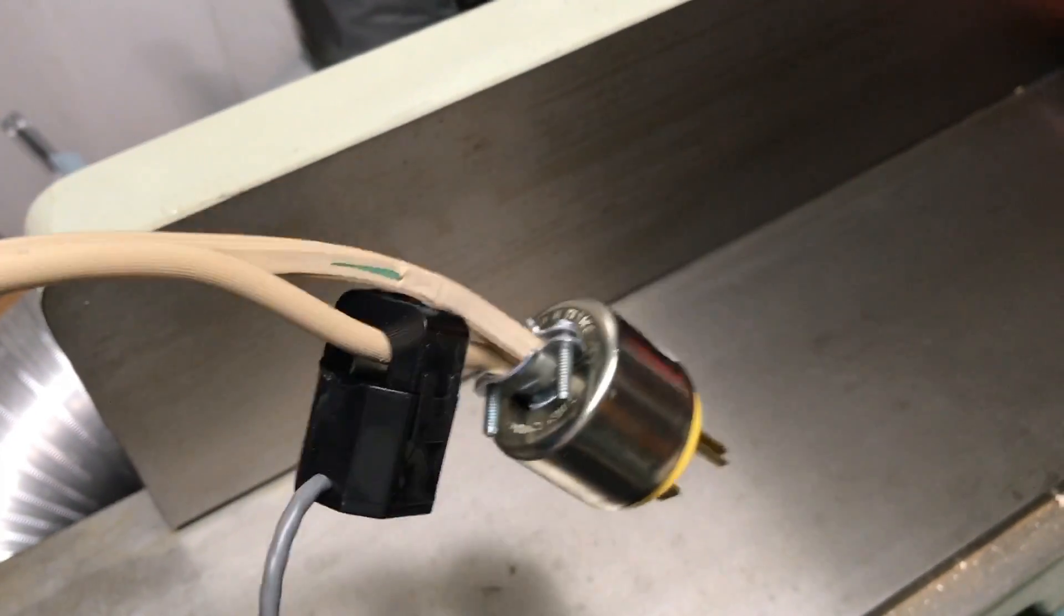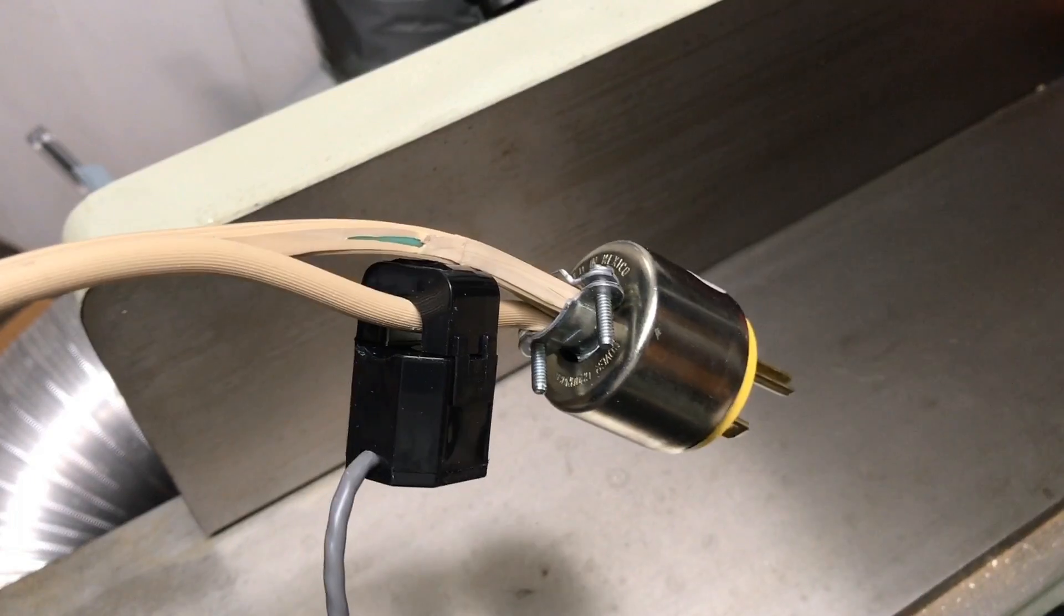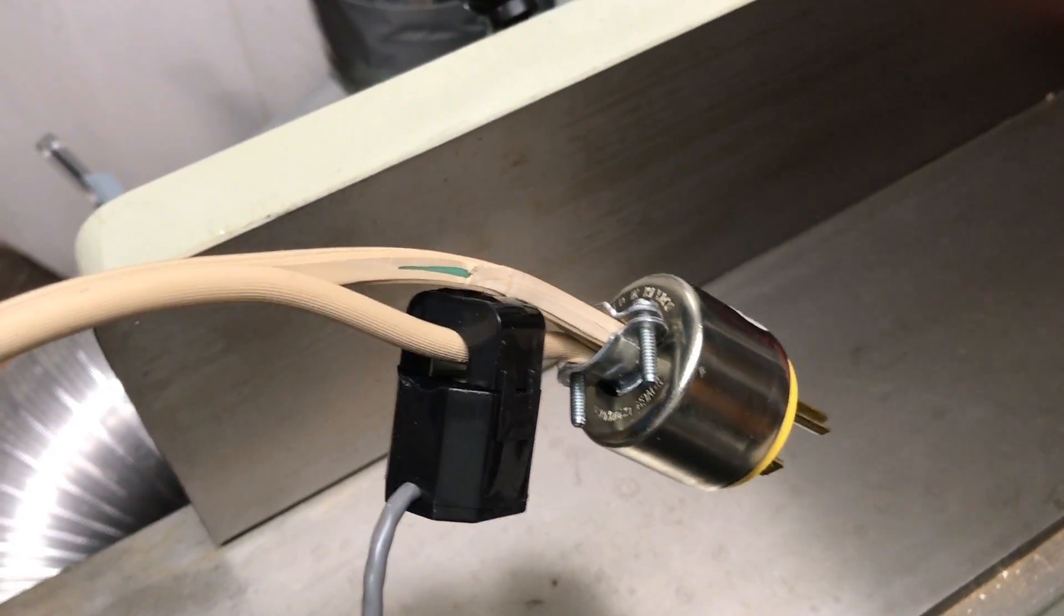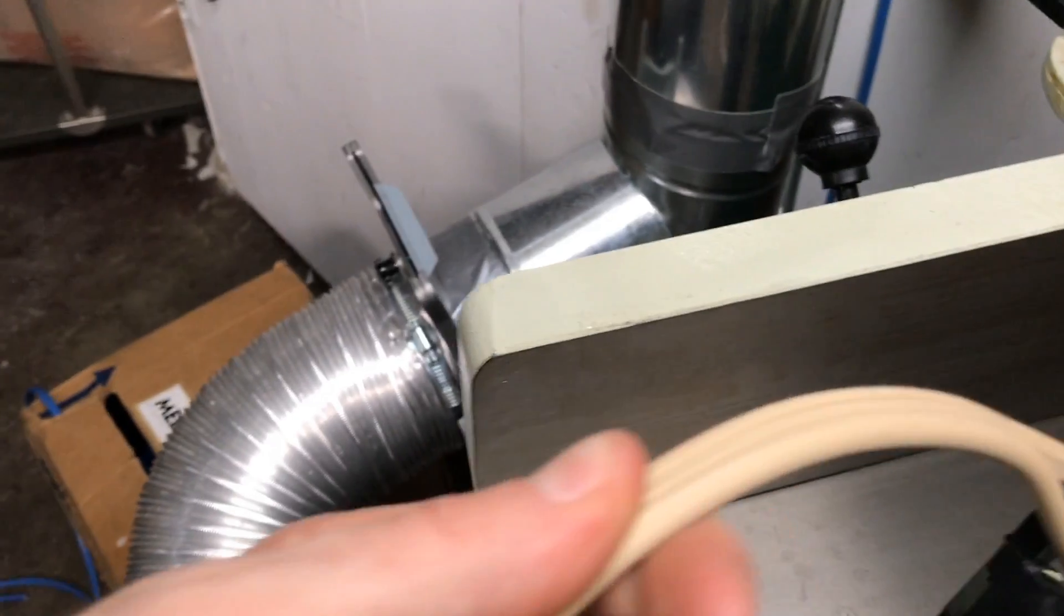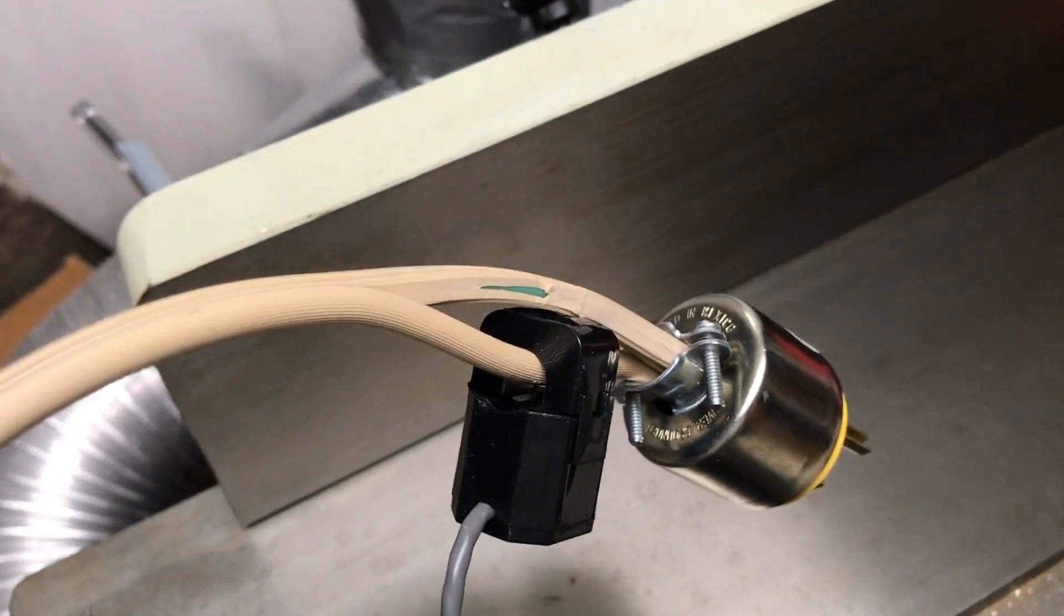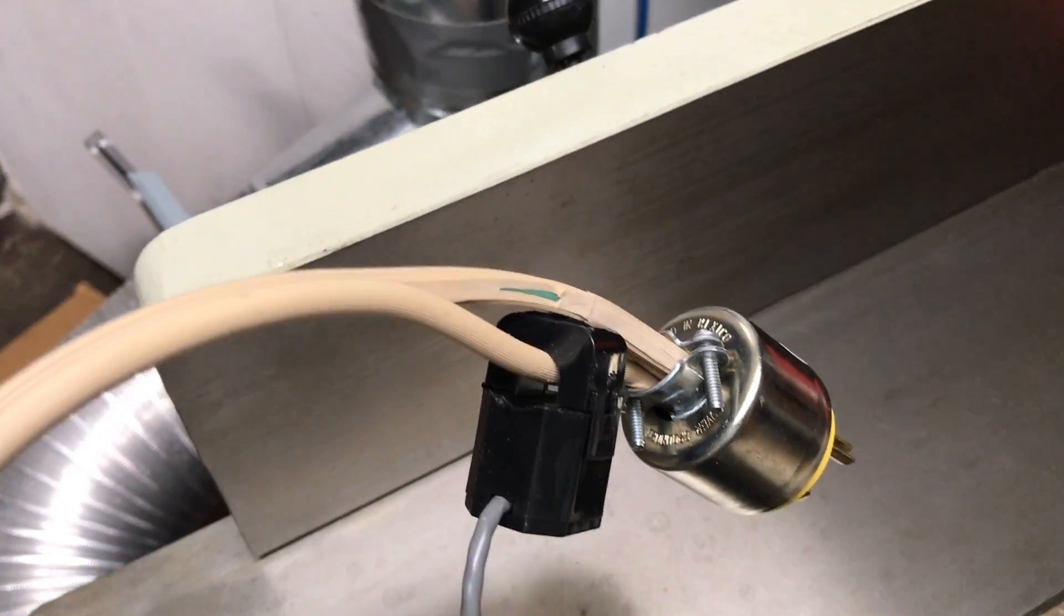The key about the current sensing transformer is it will sense however much current is passing through it. However, it can only be around one of the leads because it senses the sum of all the current going through it. If you were to just clip it around this entire wire, you would end up getting zero because the current flows in one side in the neutral or in the hot and then out the neutral.